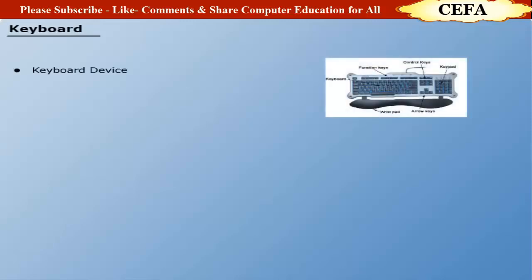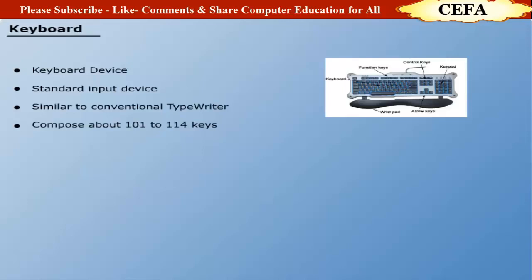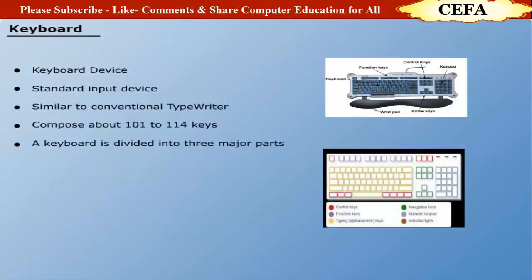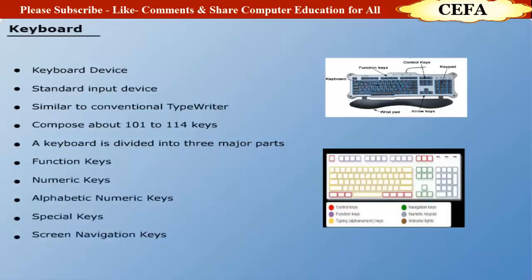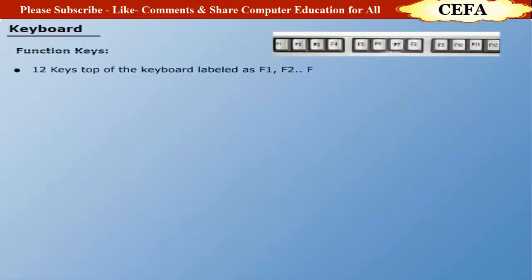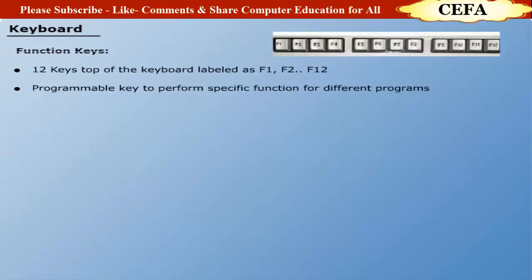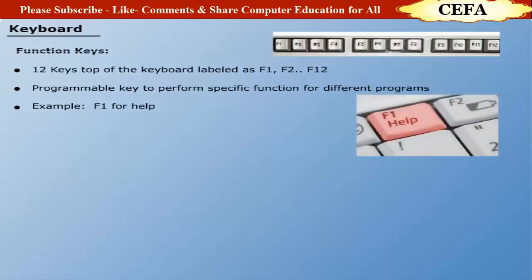Keyboard device: A keyboard is a standard input device, readily available to feed data. A keyboard is similar to a conventional typewriter with about 101 to 114 keys. A keyboard is divided into three major parts: function keys, numeric keys, alphabetic numeric keys, special keys and screen navigation keys. Function keys are 12 in number, labeled F1 to F12, and are programmable keys to perform a specific stored function. For example, F1 key is used for the help option.